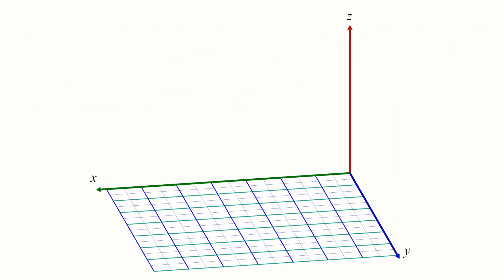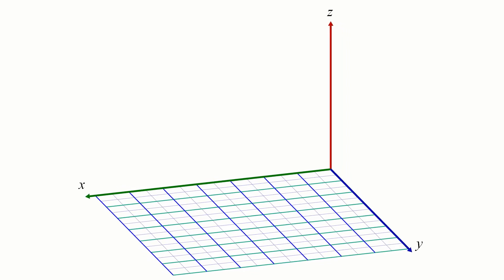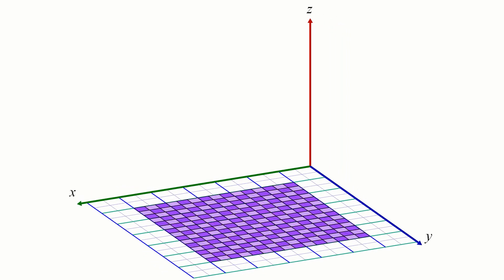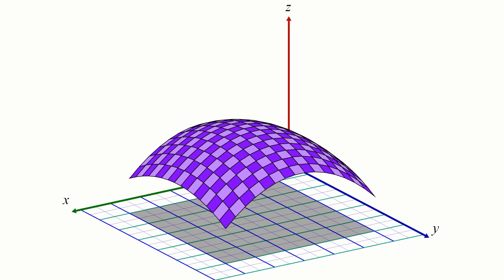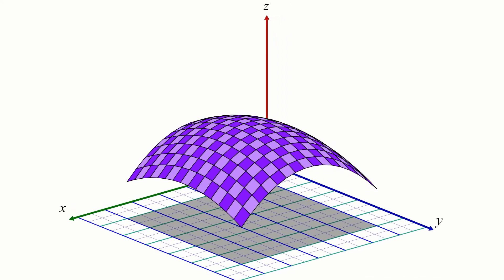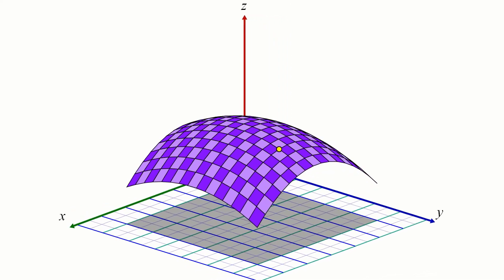We would like to do something similar for multivariable functions. For a function that takes two inputs, x and y, its graph is a surface in 3D space, and the analog of a tangent line here is a tangent plane.